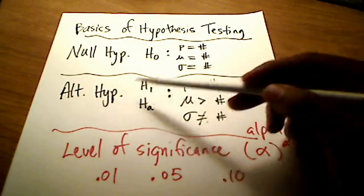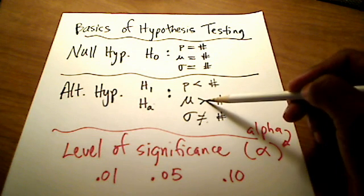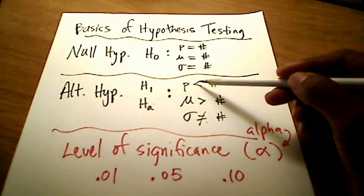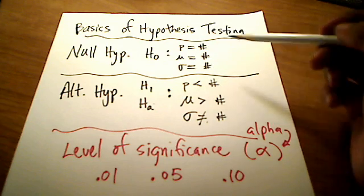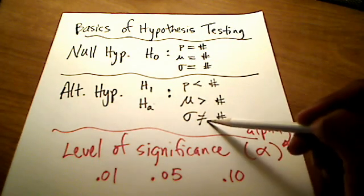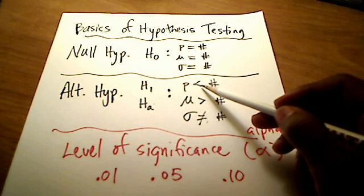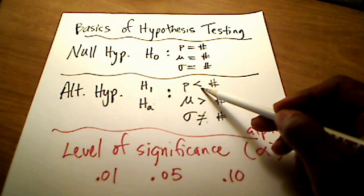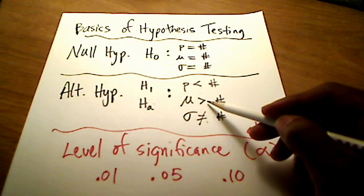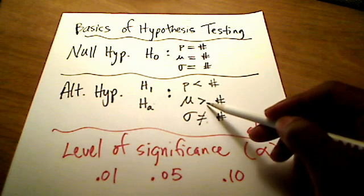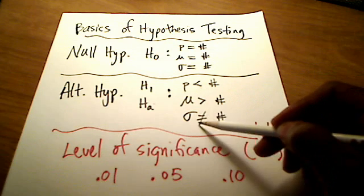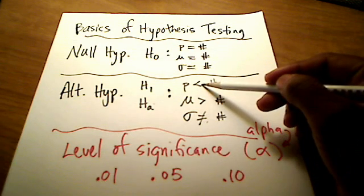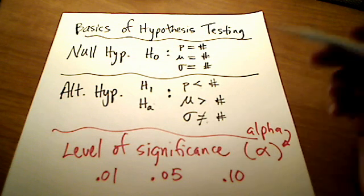The alternative hypothesis may have a less than symbol, a greater than symbol, or a not equal to symbol — but it always uses a non-equal symbol. When are you going to use less than or greater than or not equal to? If you see the words 'less than' or 'fewer than,' it's a less than symbol. If you see 'more than' or 'greater than,' it's a greater than symbol. And if there's no mention of less than or greater than, you use the not equal to symbol.